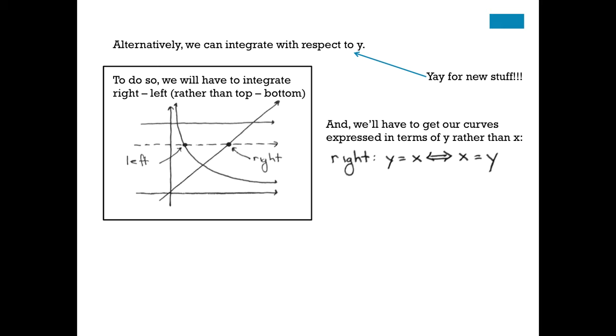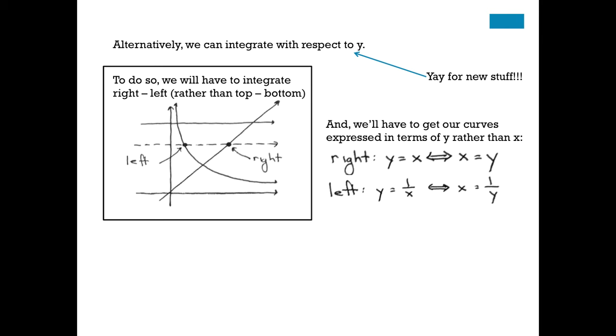Now, we'll have to get all of the curves involved in bounding this region and express them in terms of y rather than in terms of x. For example, the right-hand boundary is the slanted line. That's the line y equals x, but I want to write it in terms of y. In this case, it's not the greatest example because they just flip places so there's no work to do. Same with the left. If you take y equals 1 over x and solve it for x, you just flip the places of y and x. The later example that we'll do will illustrate this a little bit better.